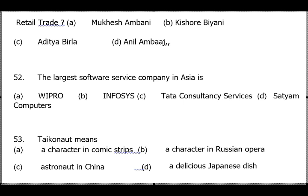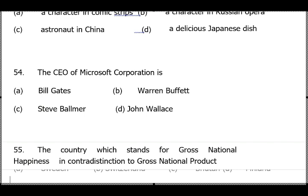Question 52: The largest software service company in Asia — answer is Tata Consultancy Services. Question 53: Taikonaut, astronaut, and cosmonaut refer to persons doing the same job in different countries. Astronaut is for English-speaking countries like America; in Russia they are called cosmonauts — Rakesh Sharma was an Indian cosmonaut as he went via Russia. In China, an astronaut is called a taikonaut. Also note: Sunita Williams went to space by Discovery; Kalpana Chawla was returning on Columbia when she died on 1 Feb 2003.